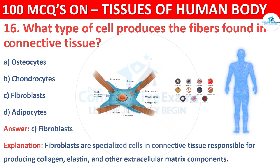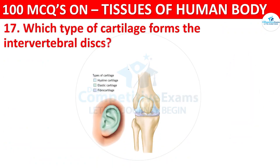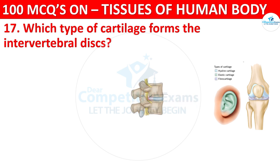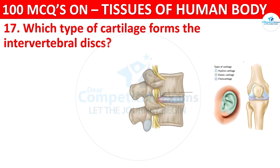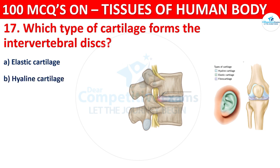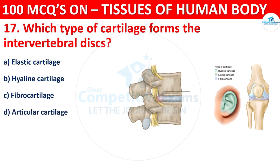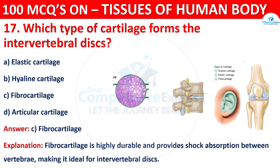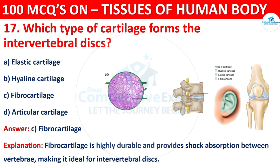Question number seventeen: which type of cartilage forms the intervertebral disc? Options are elastic cartilage, hyaline cartilage, fibrocartilage, or articular cartilage. The correct answer is C, that is fibrocartilage. Fibrocartilage is highly durable and provides shock absorption between vertebrae, making it ideal for intervertebral discs.